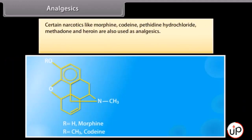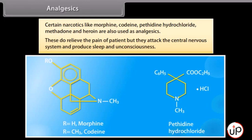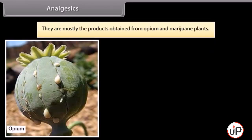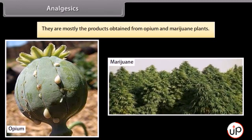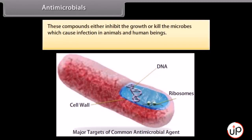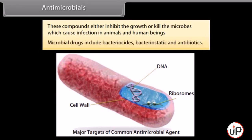Certain narcotics like morphine, codeine, pethidine hydrochloride, methadone and heroin are also used as analgesics. These relieve the pain of patients but attack the central nervous system and produce sleep and unconsciousness. They are mostly products obtained from opium and marijuana plants.